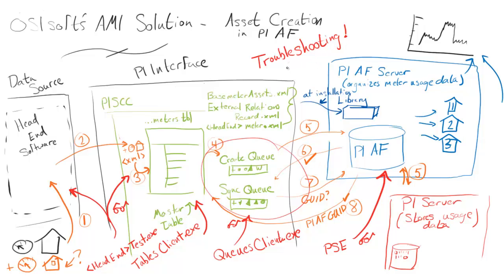One final note: whenever the PI AF server is syncing with new meters, nothing else — such as PI System Explorer — nothing else should be writing to that PI AF database. Doing so could cause an inconsistency and we'd have to re-initialize the entire system. So if you can, make that PI AF database read-only to everything except for PI SCC.